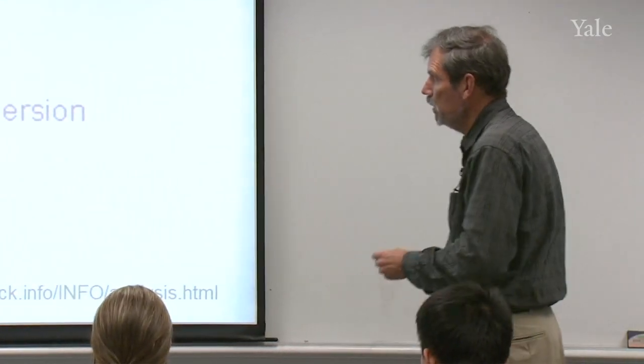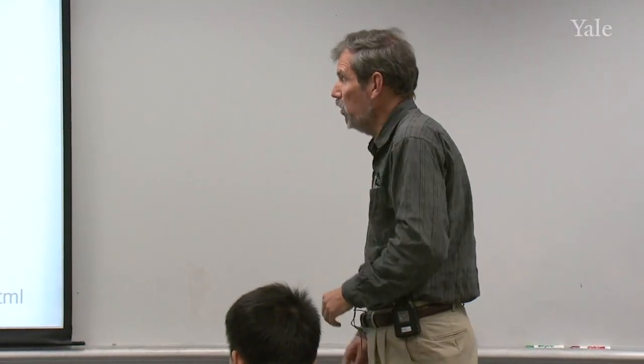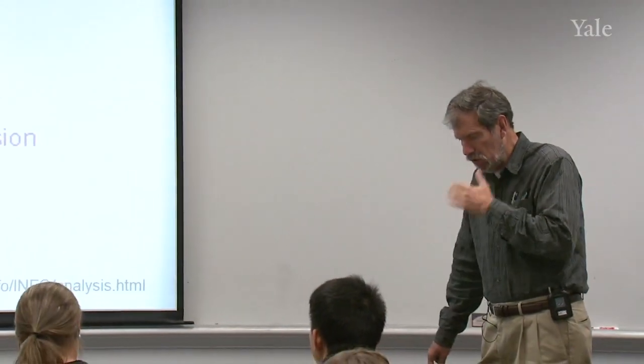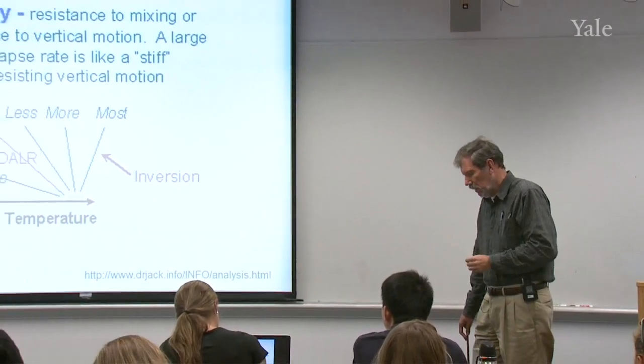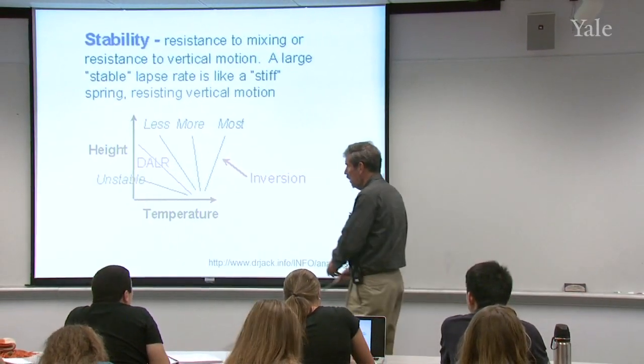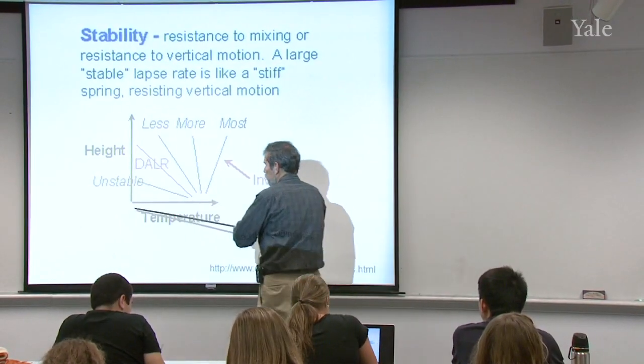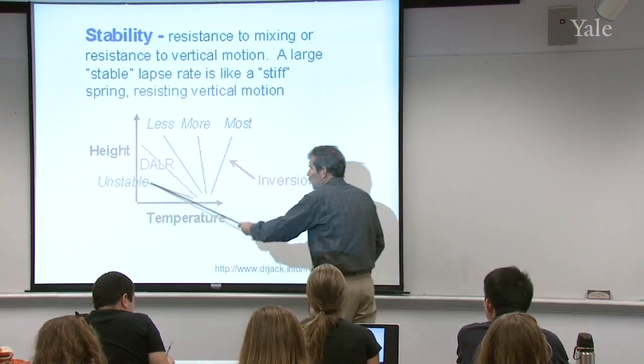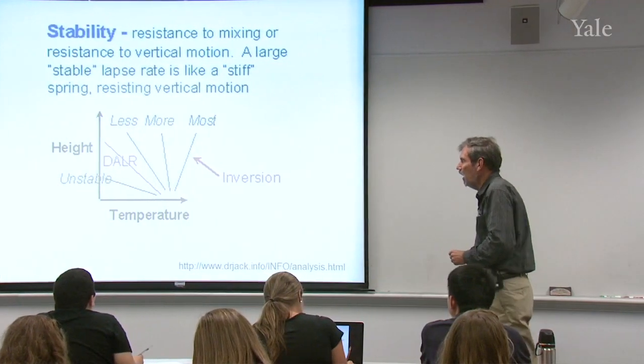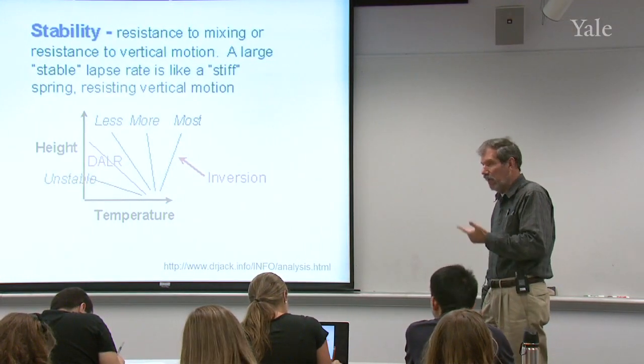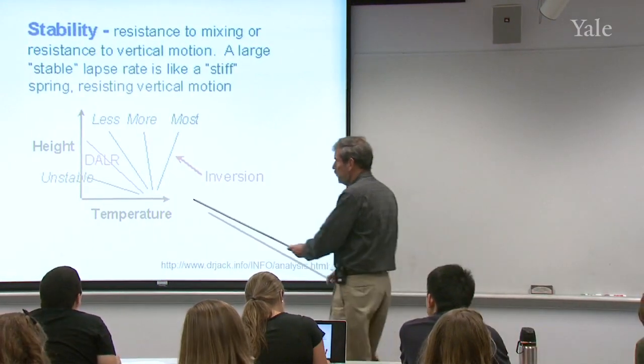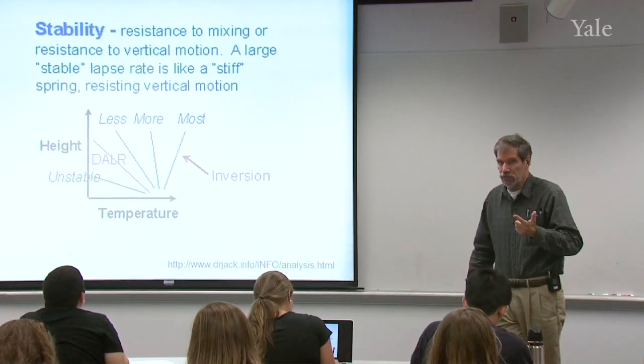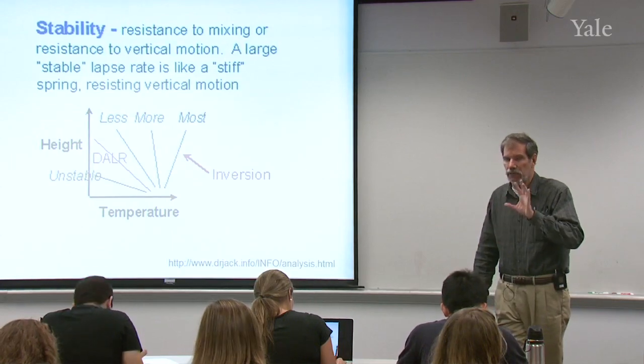This is the diagram that I had on the board. I was defining atmospheric stability as the resistance to vertical motion. This is a plot of temperature on the x-axis versus height on the y-axis. And we put on there a reference line, which this author has written DALR. That's the dry adiabatic lapse rate. It's good to call it the dry adiabatic lapse rate, because inside a cloud, that takes on a different slope.